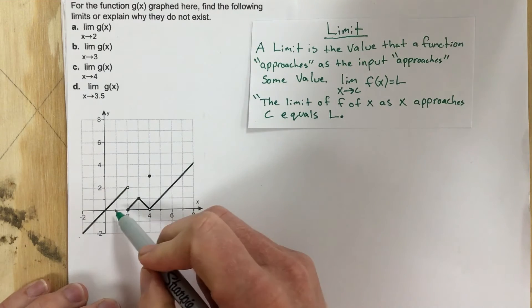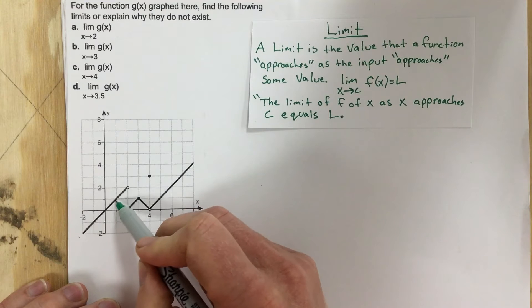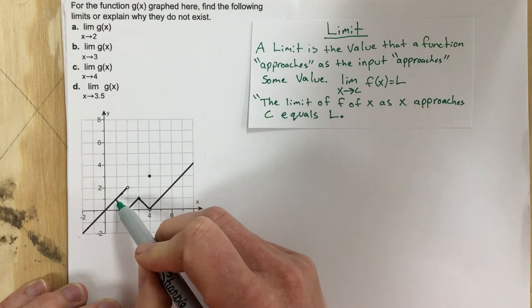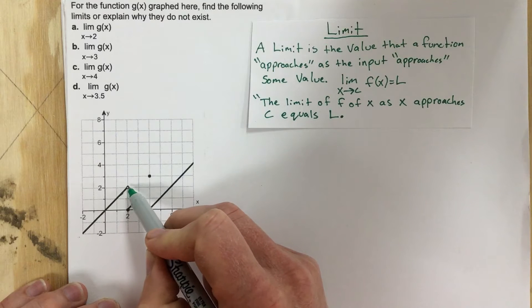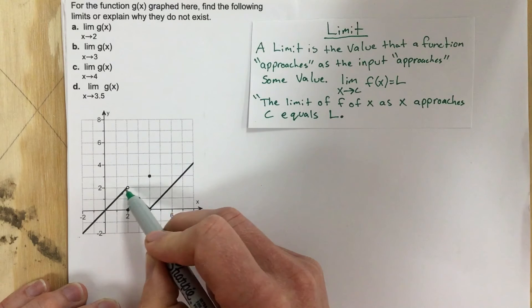Well, as you can see, as we approach 2 from the left—now keep in mind I'm using the word left meaning I'm coming from left to right—as I approach it from the left, the value of the function approaches 2. It approaches this y value of 2.